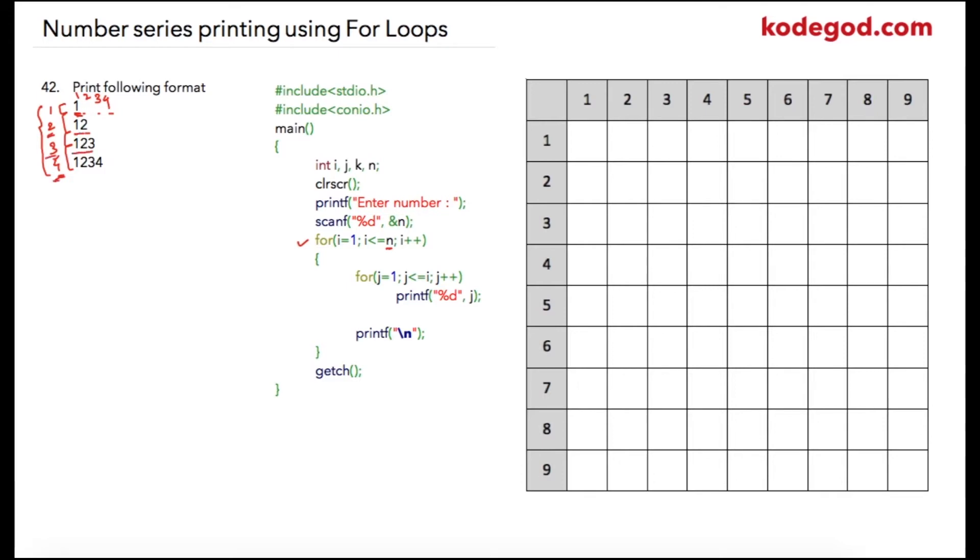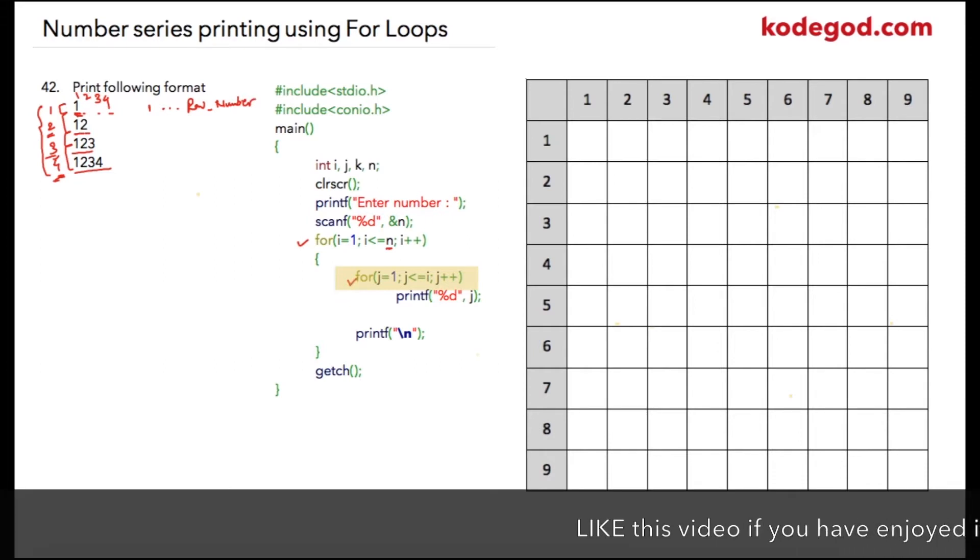In the second loop it has to run starting from 1 till your row number. So I am writing second loop: j equal to 1, and condition will be j less than or equal to i, and I am incrementing j by 1. Inside of this loop we are just displaying value of j so that on every row value always starts from 1, 2, and 3.